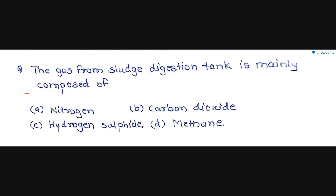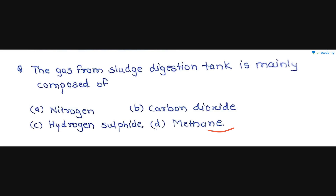The first question is: the gas from a sludge digestion tank is mainly composed of — option A is nitrogen, option B is carbon dioxide, option C is hydrogen sulfide, and option D is methane. In a sludge digestion tank, anaerobic decomposition takes place and from that we know that mainly methane is produced. Carbon dioxide is also present but methane is in greater proportion. So option D, methane, is the correct answer.